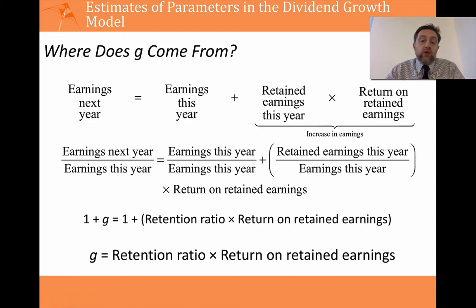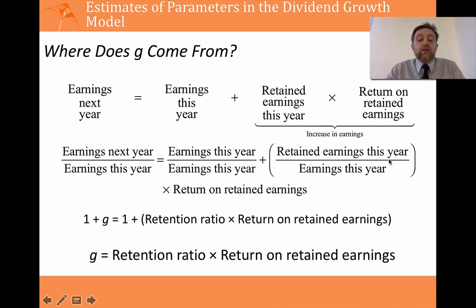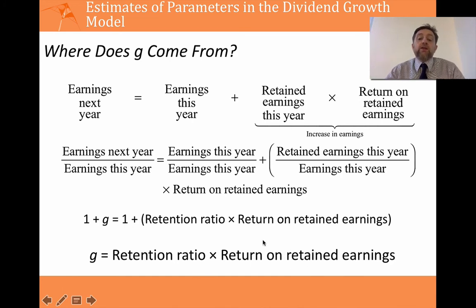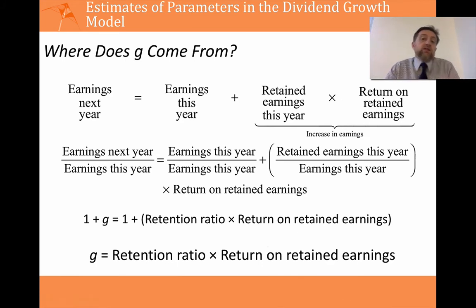High growth companies will be those that don't pay out a lot of dividends — that's the retention ratio part — meaning they're holding back a large amount. And/or they are companies with a very high return when they reinvest, perhaps from a new project generating very high returns. So two factors affect the growth rate: the retention ratio — how much money you retain — and the return on your retained earnings.